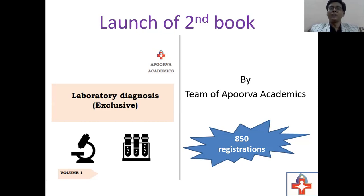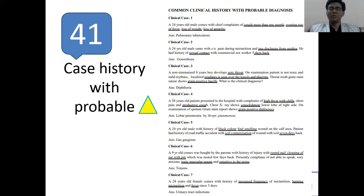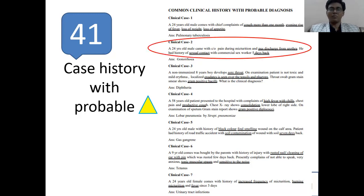The unique feature of this book is a series of 41 case histories with probable diagnosis highlighting important points. For example, a 24-year-old male came with complaint of pain during urination and pus discharged from urethra. He had history of sexual contact with a commercial sex worker five days back. Diagnosis: Gonorrhea.